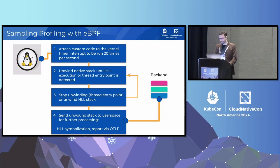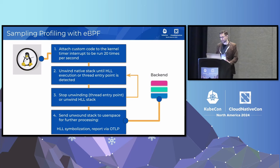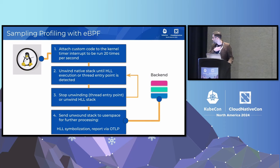For CPU profiling via sampling with eBPF, we attach to the kernel timer interrupt and run our code at 20 Hz. This means 20 times a second, the kernel interrupts every non-idle CPU core and runs our eBPF program, which immediately begins unwinding the stack at the point of interruption until the thread entry point is reached. During stack unwinding, we can automatically switch between native and high-level language unwinding depending on where in memory the program counter points, allowing us to seamlessly capture stack traces containing Python or Java frames calling into a C library. Once unwinding completes, stack frames are reported to user space for additional processing such as casting and enriching with container and Kubernetes metadata.